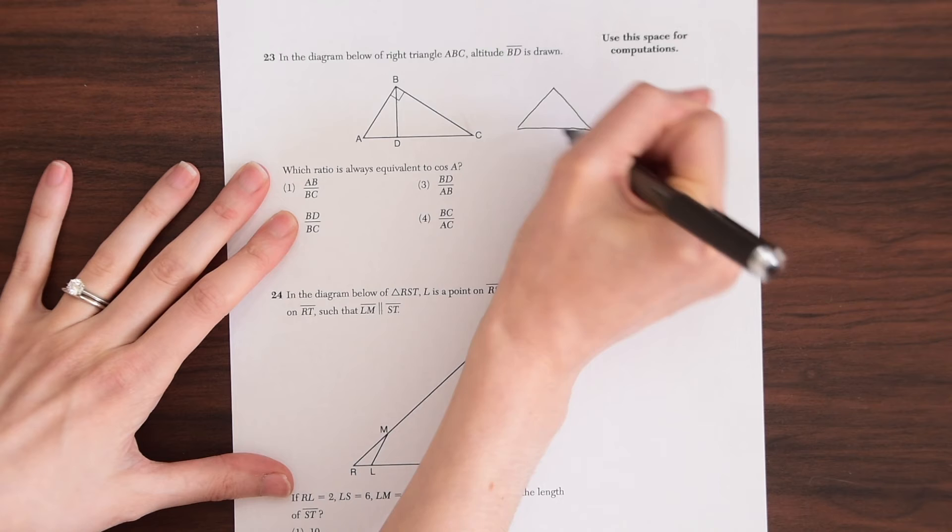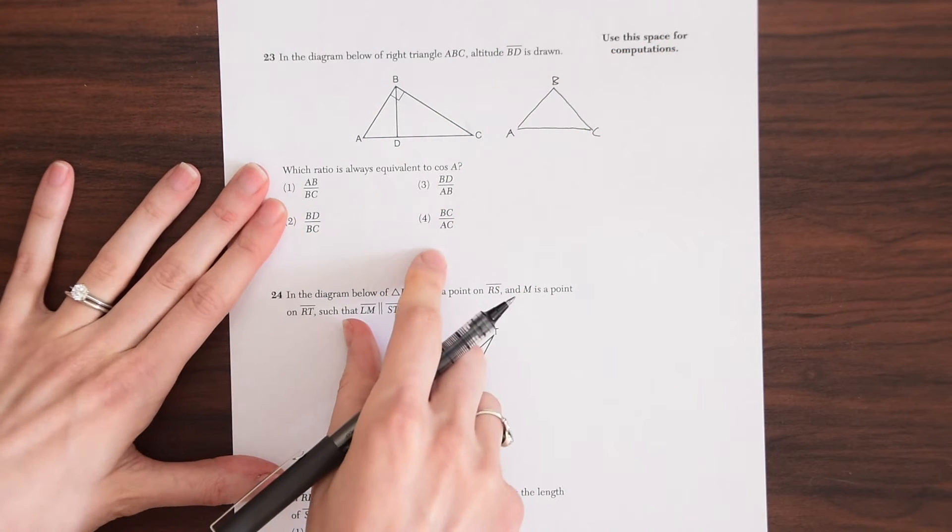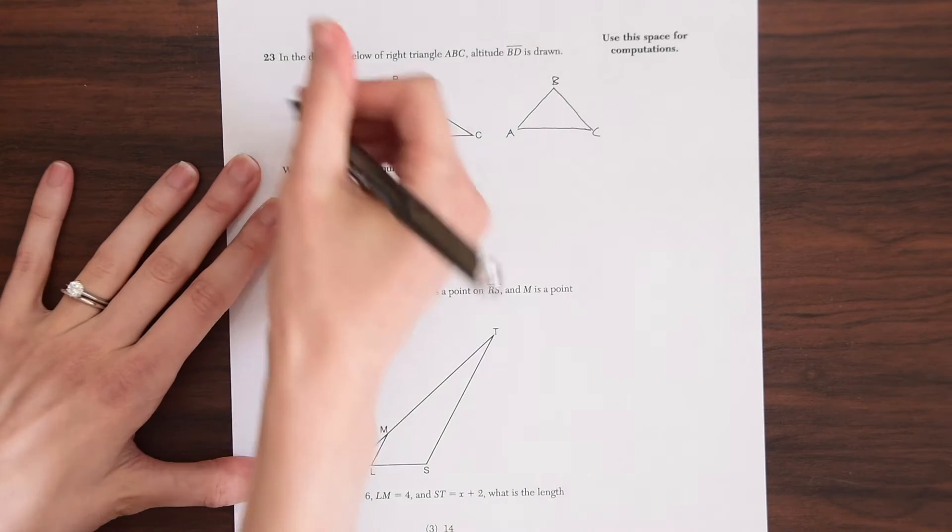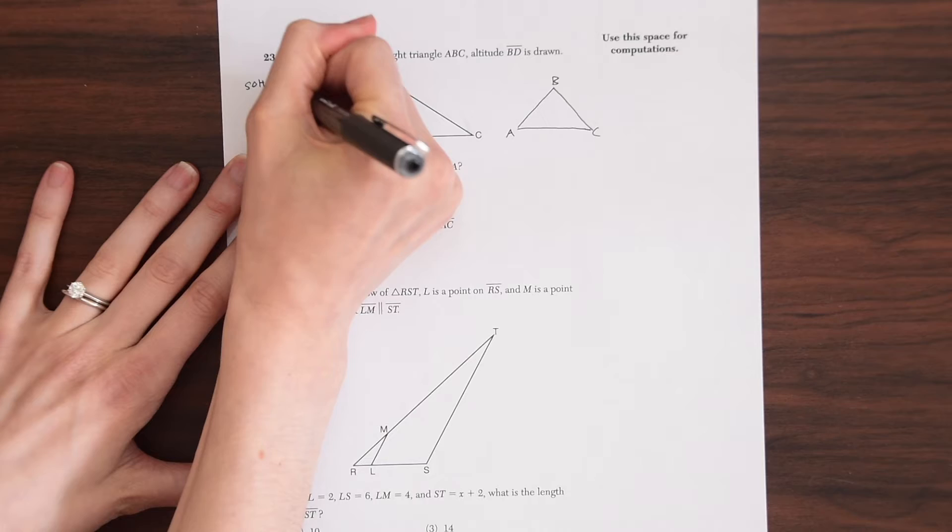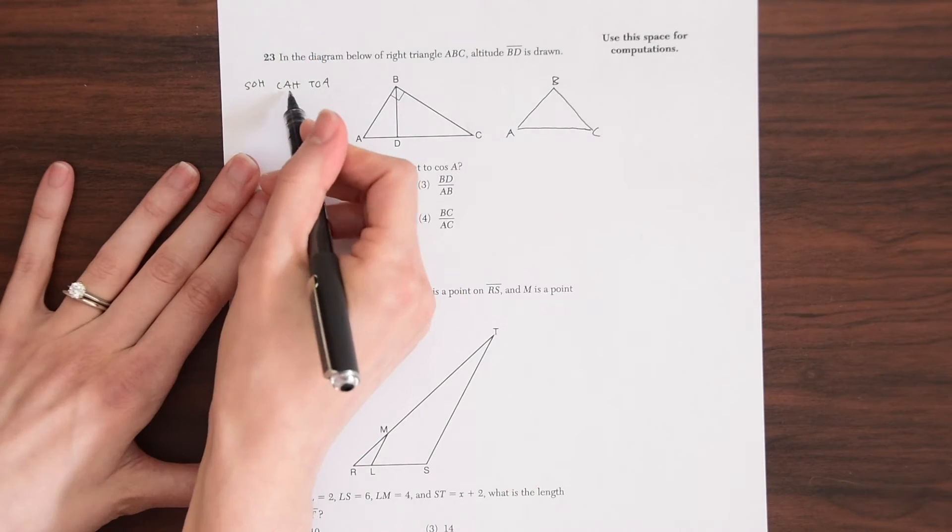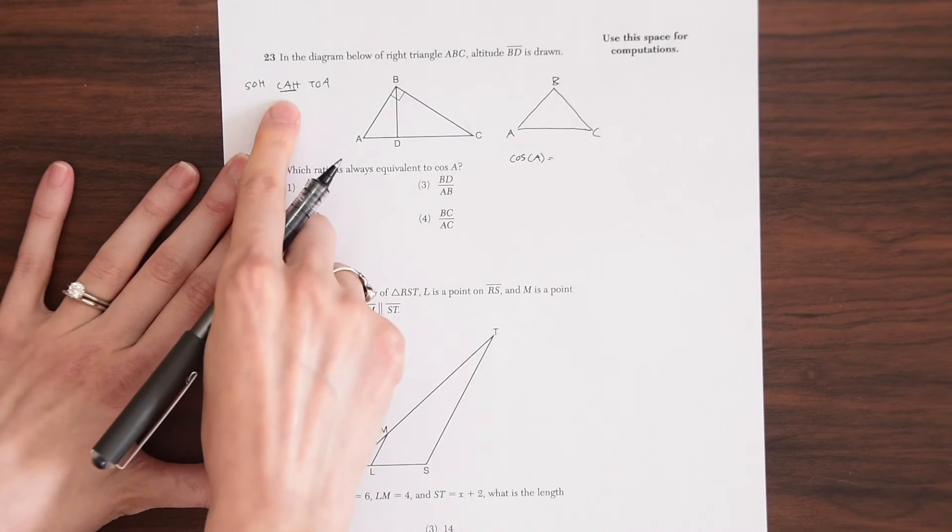So I'm just going to draw it separately over here, ABC. And then we want to know the ratio what's equivalent to cosine of A. So if you remember our SOHCAHTOA, we see that cosine is equal to adjacent over the hypotenuse.